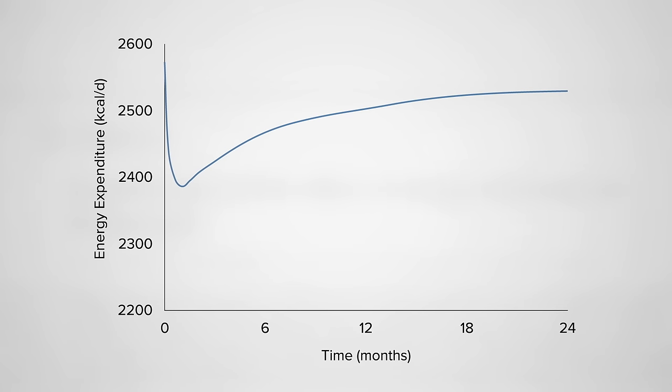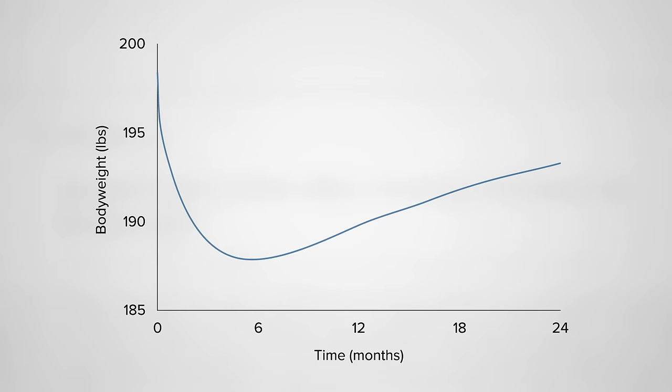Since an 800-calorie drop in intake may slow your metabolism and physical activity about 200 calories a day, with no difference between calories in and calories out at six months, no wonder your weight loss grinds to a complete halt.